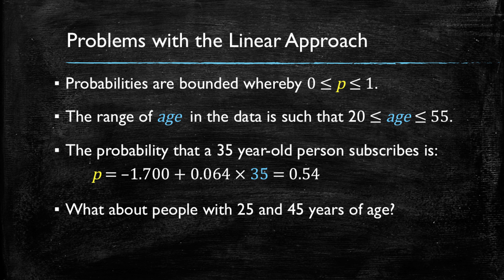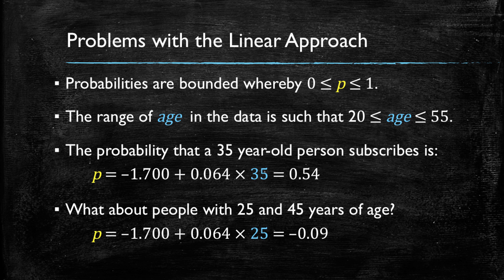But what about people with 25 or 45 years of age? Given the range of age, this should work just as well. However, if we plug in 25, we find that the probability that this customer buys is estimated to be minus 0.09. And this cannot be correct since a probability cannot have a negative value.